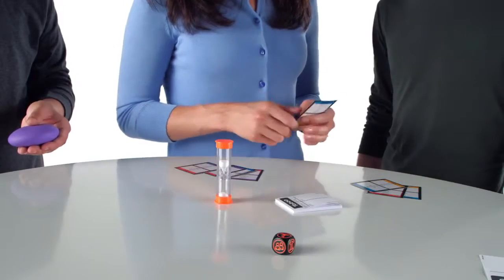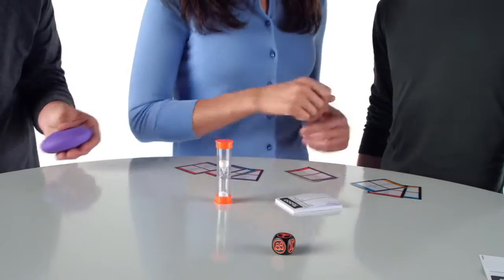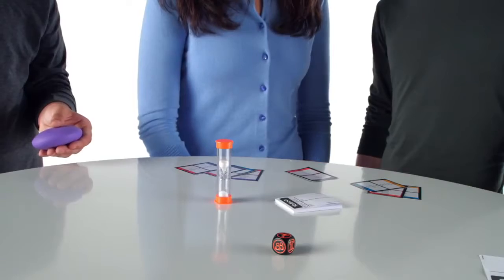If that player says a taboo word, they can get squeaked by the other team. They will then lose the chance to guess that clue and score a point.